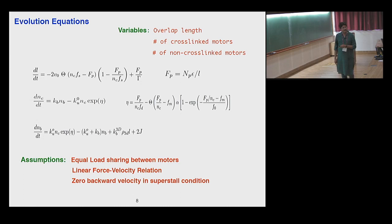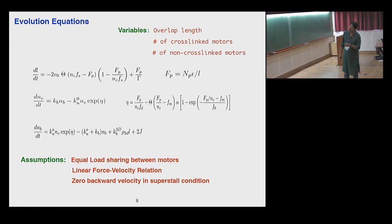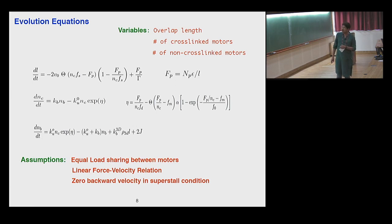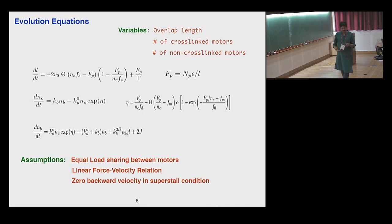One can write down a minimal model where the variables are: the overlap length L; N_C, the number of cross-linked motors in the overlap; and N_B, the motors attached to only one filament that do not exert forces. The dynamics of L is governed by a term decreasing the overlap length (due to motors) and a term increasing it (due to passive cross-linkers). Key assumptions include load equally shared by cross-linked motors, a linear force-velocity relation, and zero backward velocity in the superstall condition. This set of stochastic equations governs the system dynamics, and we perform a linear stability analysis.